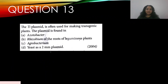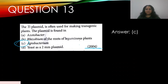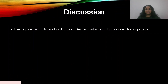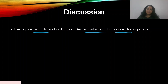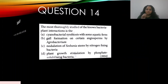Question 13: The Ti plasmid is often used for making transgenic plants. The plasmid is found in — this appeared in 2004. Options: A — Azotobacter, B — Rhizobium in roots of leguminous plants, C — Agrobacterium, D — yeast as a 2 mm plasmid. The answer is C — the Ti plasmid is found in Agrobacterium, which acts as a vector in plants to form transgenic plants.